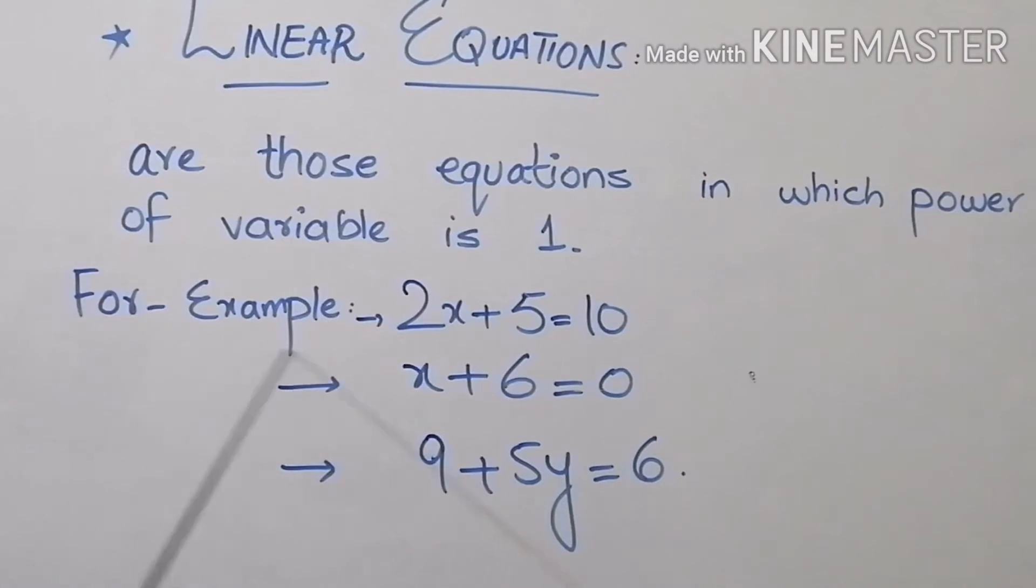Here are a few examples of linear equations like 2x plus 5 equals to 10. Here x is a variable and the power of the variable is 1. We are also going to discuss a few more examples like in the second example, x plus 6 is equals to 0. In this example, the power of the variable x is 1. That's why this is also a linear equation.